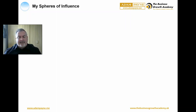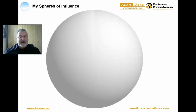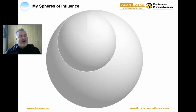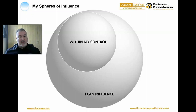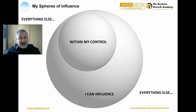Take a piece of paper and draw a large circle on it. Within that large circle, draw another circle about two thirds the size. Within that smaller circle, label it 'within my control.' The larger one, label 'I can influence,' and then everything else around the outside, label 'everything else.'